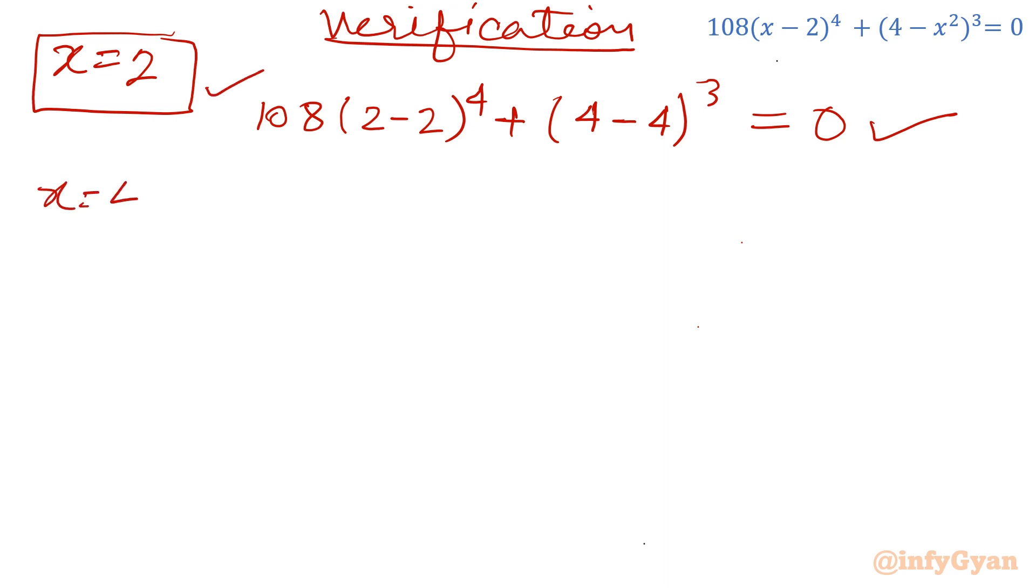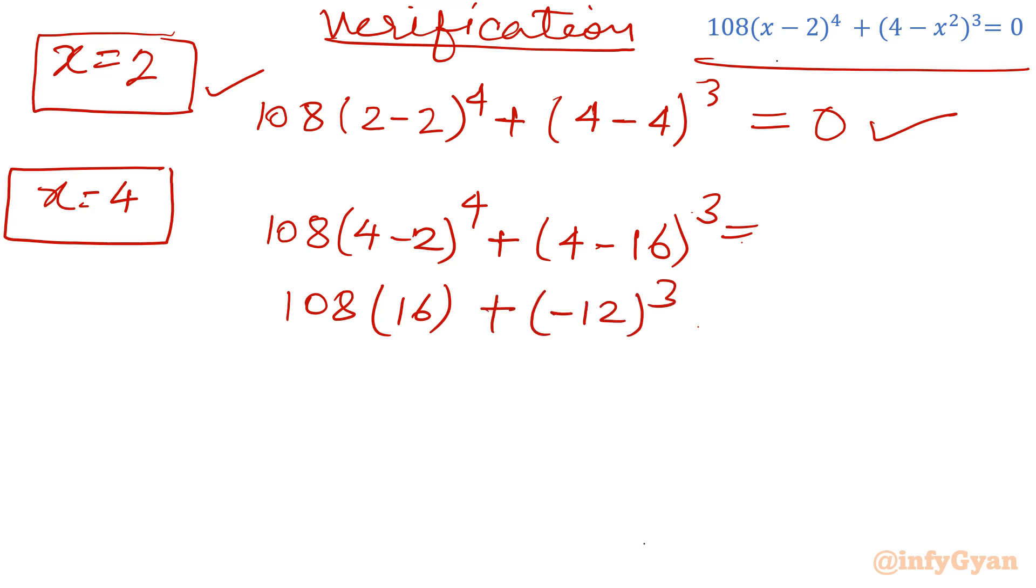Second is x equals 4. Let us put 108(4-2)⁴ plus (4-16)³. 4-2 is 2 to the power 4, let me write 16 directly, plus (-12)³. 108 times 16 is 1728, and if you find out this cube, then it gives -1728. This value is 0. That means x equals 4 is also a true solution.